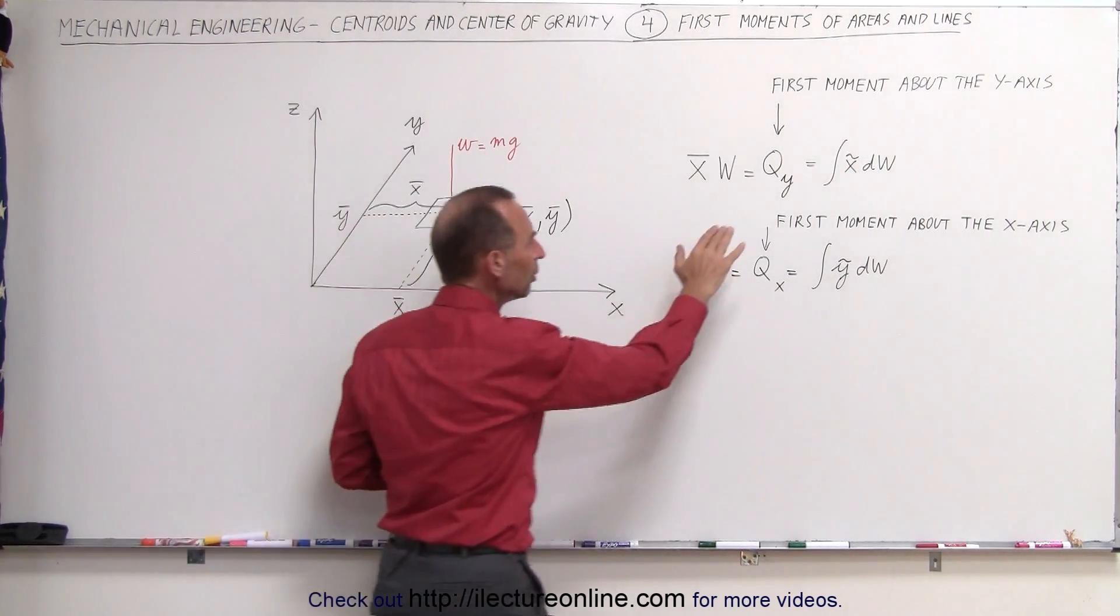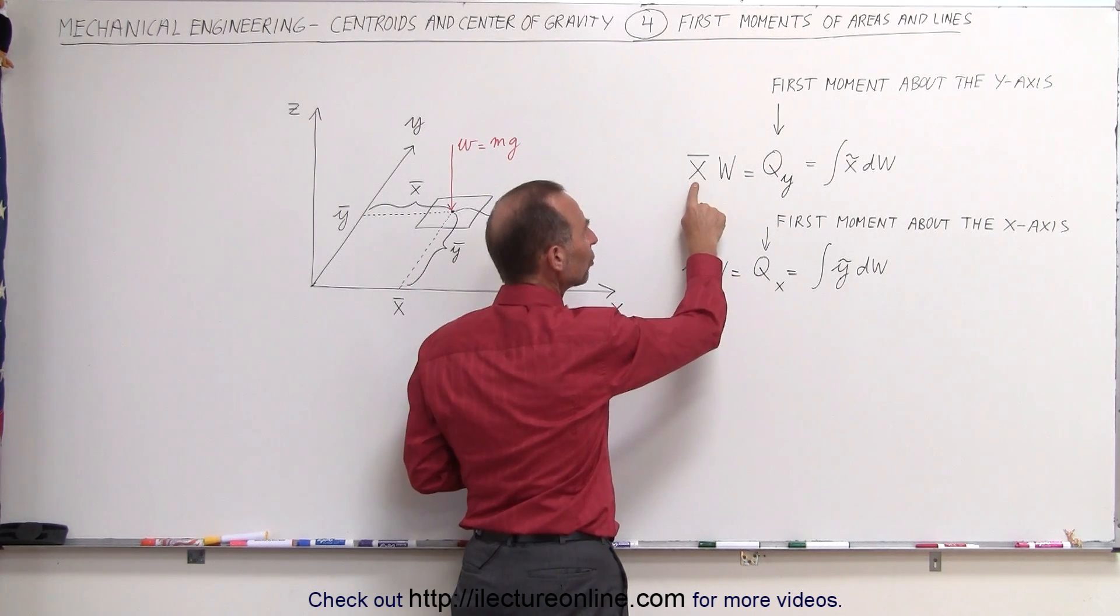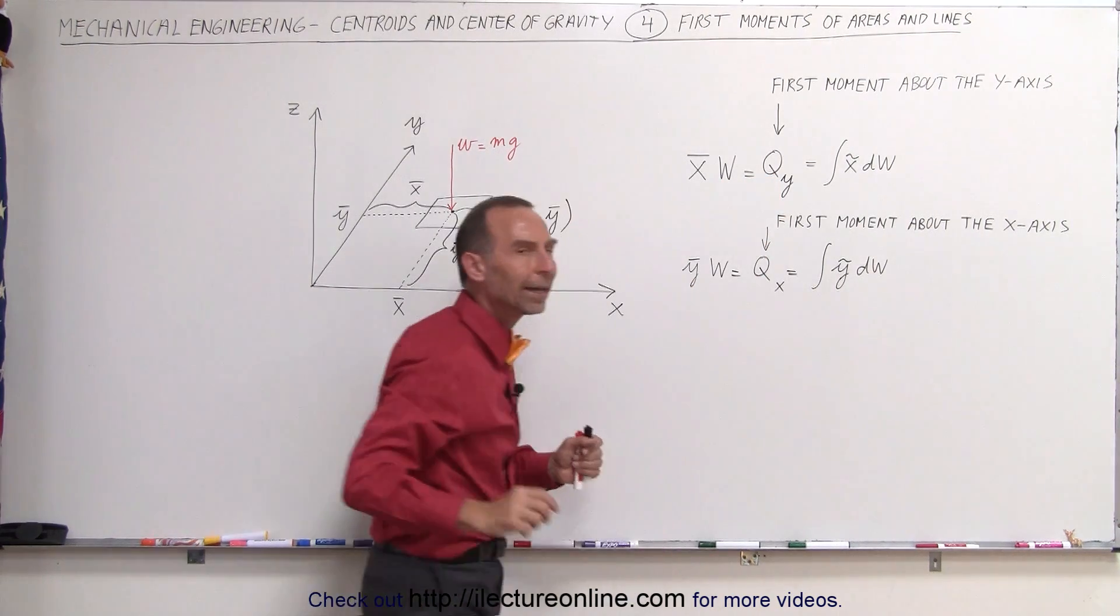Now we call this integral, or we call the product of the x-coordinate of the center of gravity times the weight of the object, we call that the first moment about the y-axis.